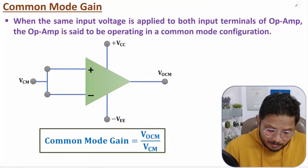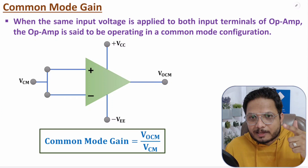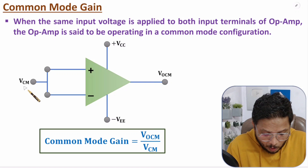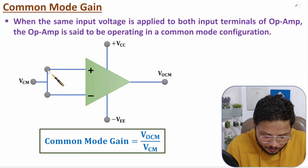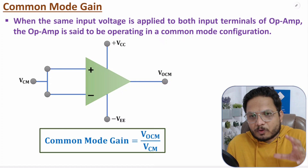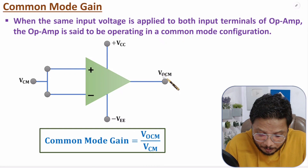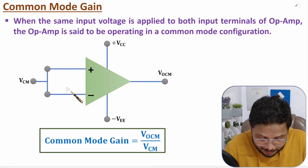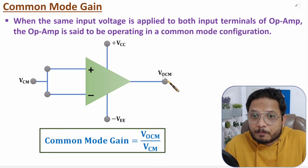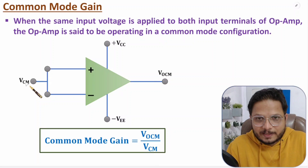The next definition is common mode gain. Gain is output divided by input. So common mode gain is the common mode output VOCM divided by the common mode input VCM, where a common input voltage is given to both the inverting and non-inverting terminals. Common mode gain should be zero ideally, because the op-amp output is gain into the difference between the two inputs, and if a common signal is applied, the difference is zero, so output should ideally be zero.